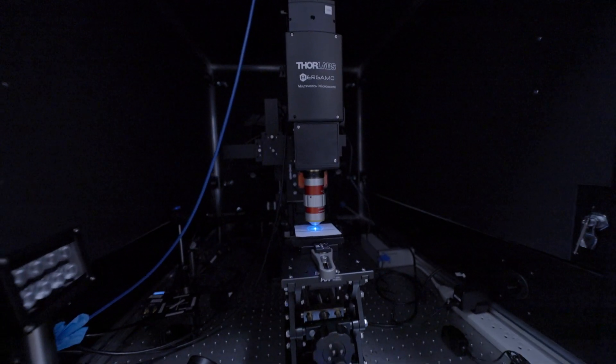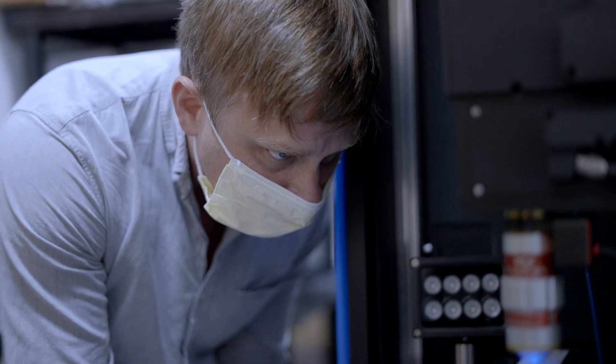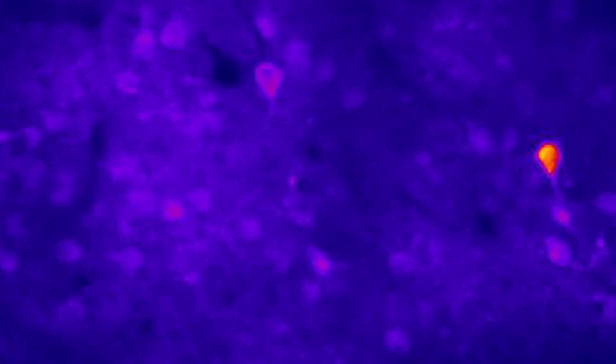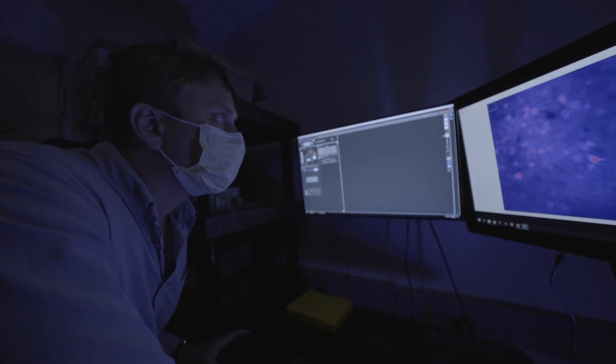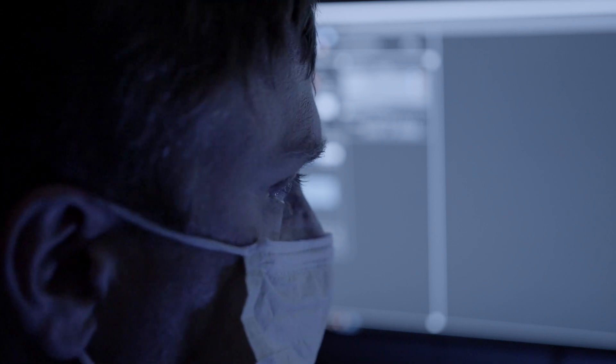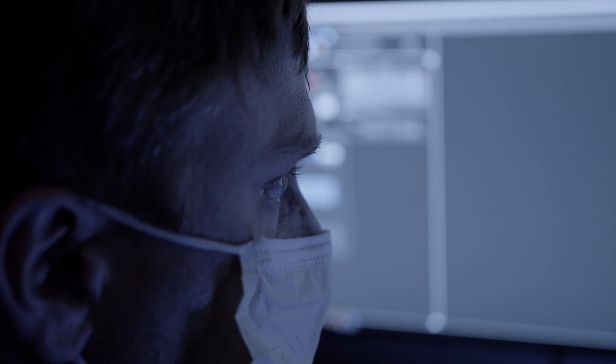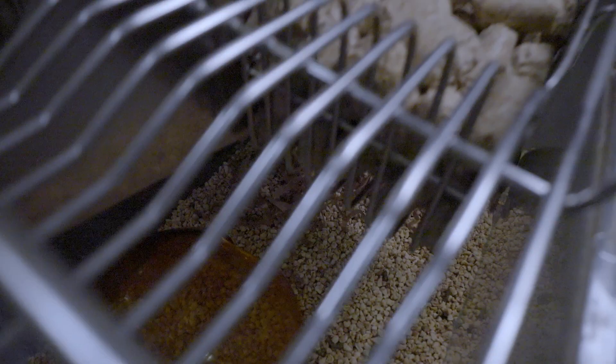With our two-photon microscope in our behavior setup, we see flashes of fluorescent light. This is an important tool for the field because we're able to ask what individual brain cells and groups of hundreds or thousands of brain cells are doing in real time as an animal focuses attention and changes attention.